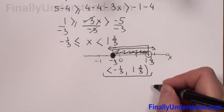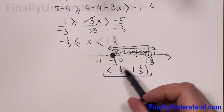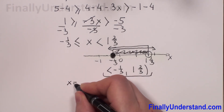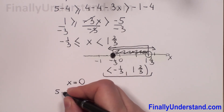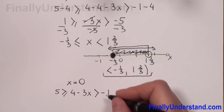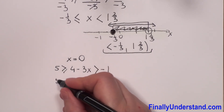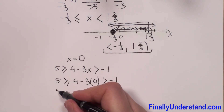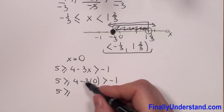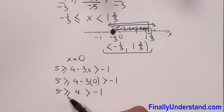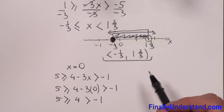Now we have to check if the solution is correct. I choose x equals 0 from this interval since it's the easiest number. Substituting into the inequality: 5 is greater than or equals 4 minus 3 times 0 is greater than negative 1. 3 times 0 is 0, so we get 5 is greater than or equals 4 is greater than negative 1. We have 5 is greater than 4 and 4 is greater than negative 1 — both true. Our solution is correct.